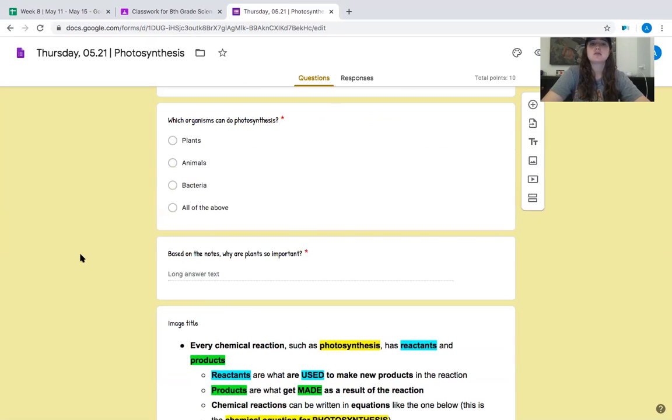All right, based on the notes, why are plants so important? Type your answer out. Plants are important because. Write a sentence, write a couple sentences, but you should be typing. Plants are important because dot dot dot. Look back up at the notes if you need help coming up with an answer. Keep typing, complete sentences. Please don't just say I don't know because that's ridiculous. Okay, if you need more time, pause me and hit play when you're done. Otherwise, if you're ready to move on, I'm going to keep reading.